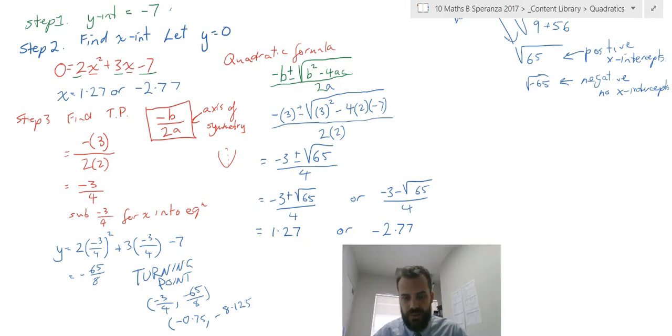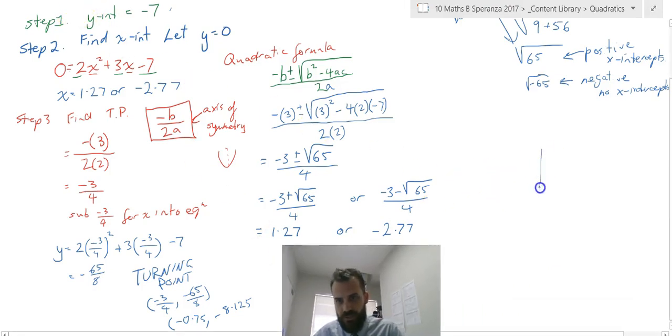Draw a Cartesian plane. Turning point of negative 0.75, negative 8.125. X-intercept of 1.27, let's start there, and an x-intercept of negative 2.77, that'll be all the way out here somewhere. Now a y-intercept of negative 7.